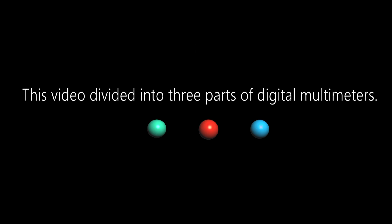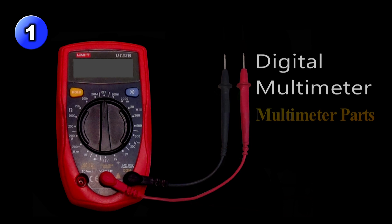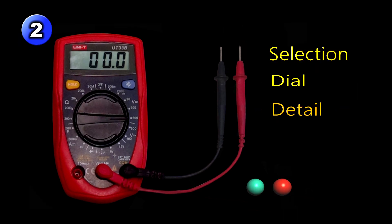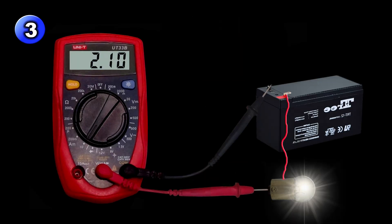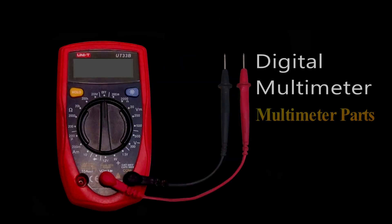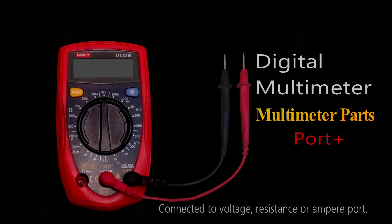Welcome back to ProHack. This video is divided into three parts of digital multimeters: part one covers digital multimeter parts, part two discusses the selection dial, and part three focuses on determining the value of parts. The multimeter includes a display, selection dial, prod plus and minus, hold button, and display light button, which are common tools.